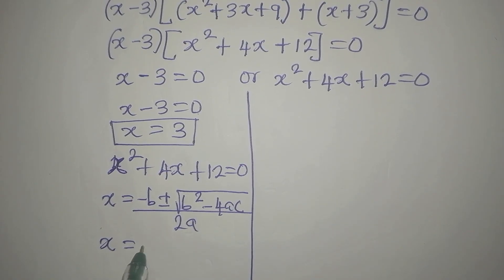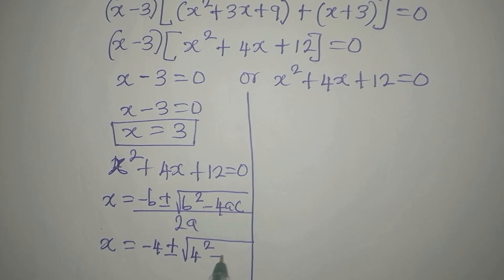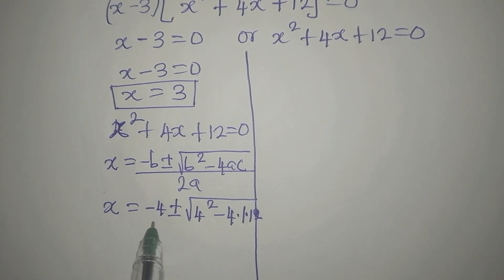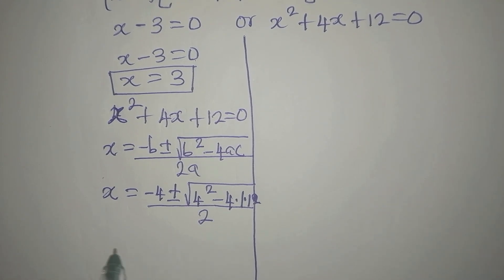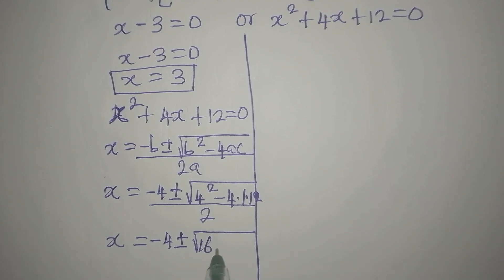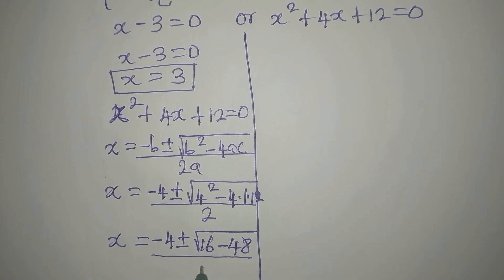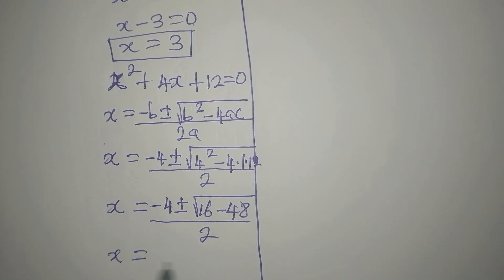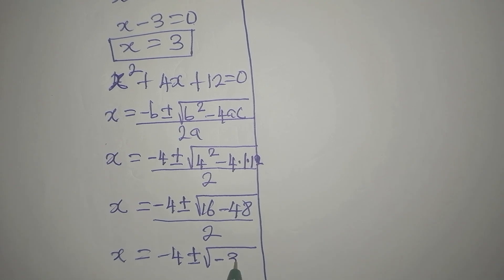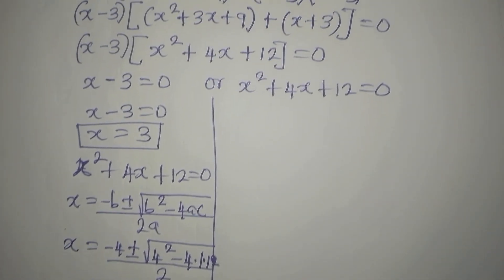So x will now be equal to: b becomes minus 4, plus or minus the square root of b squared — that is 4 squared — minus 4 times 1 times 12, because c is 12. We divide all through by 2 times 1, which is 2. So x is minus 4, plus or minus the square root of 16 minus 48. And 16 minus 48 is minus 32. We divide all of this by 2.